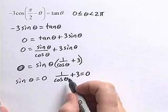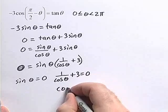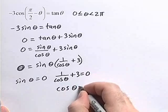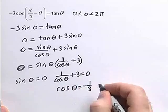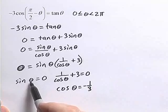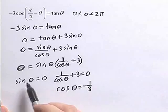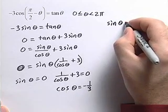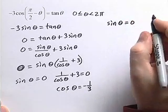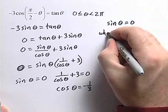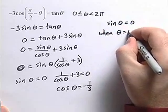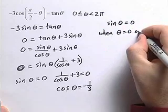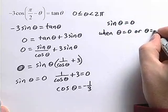And this second equation here will yield us cosine of theta is equal to negative 1 third. So we need to find some values for theta that solve these two equations. We know that sine of theta is going to equal 0 when theta is equal to 0, or theta is equal to pi.